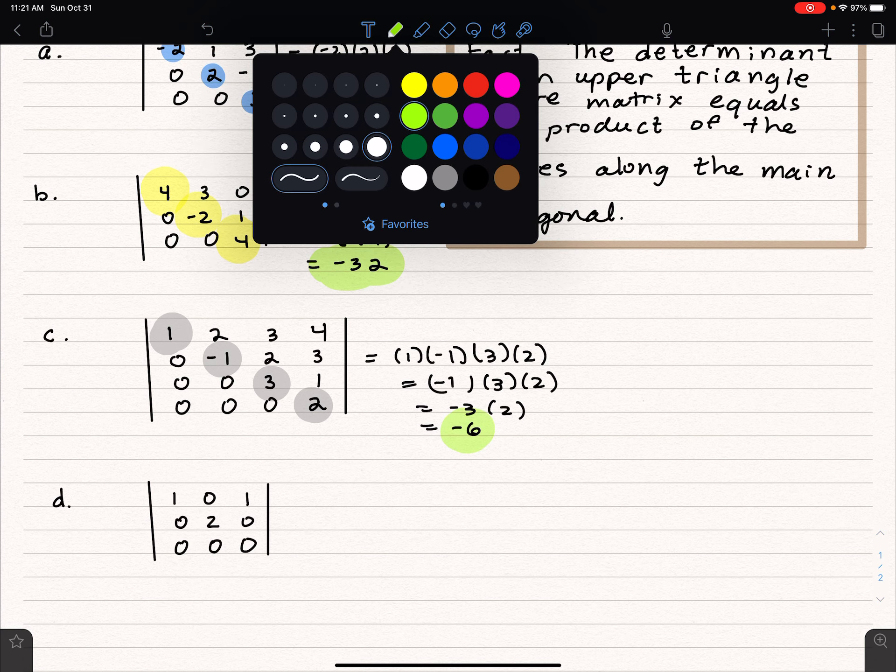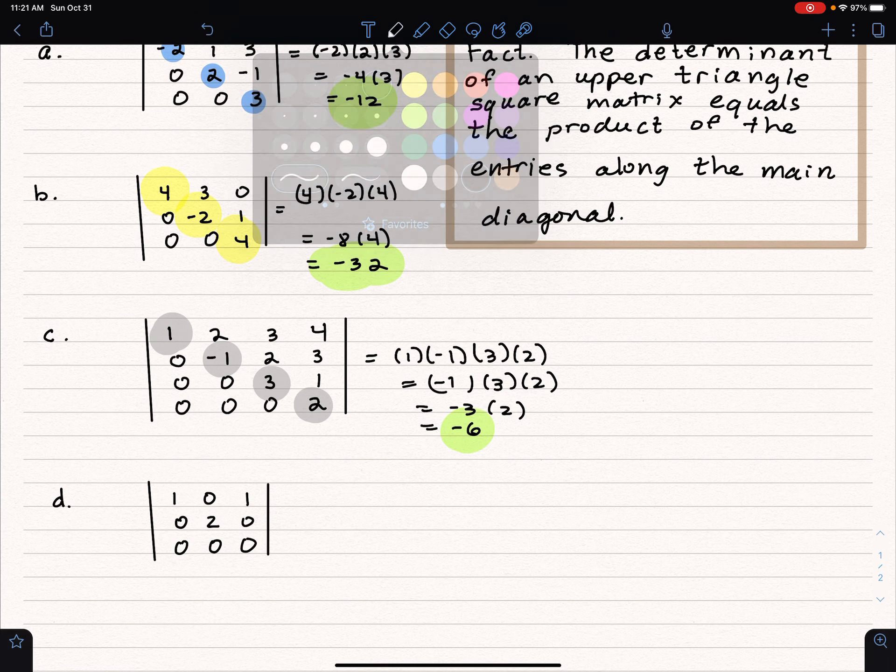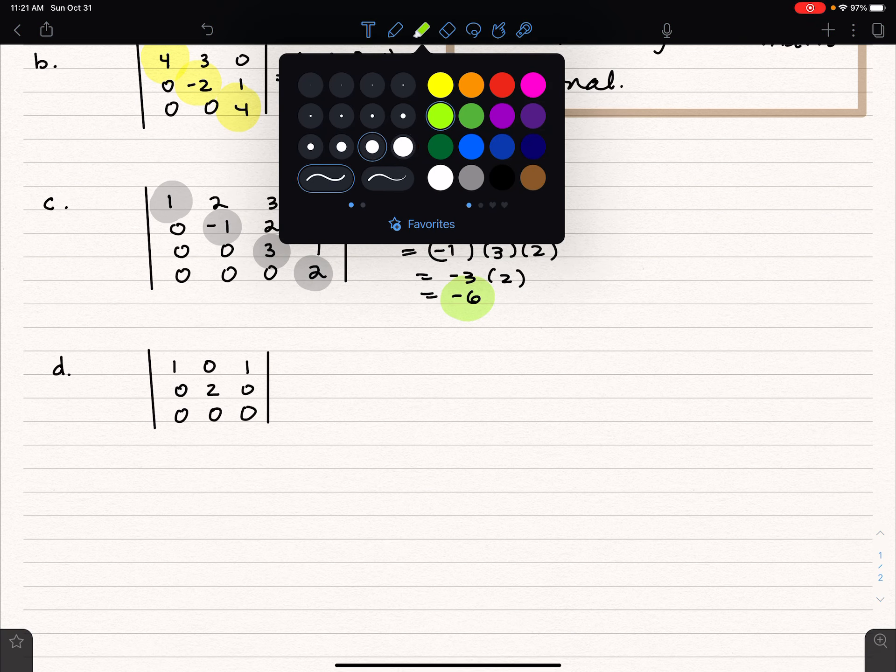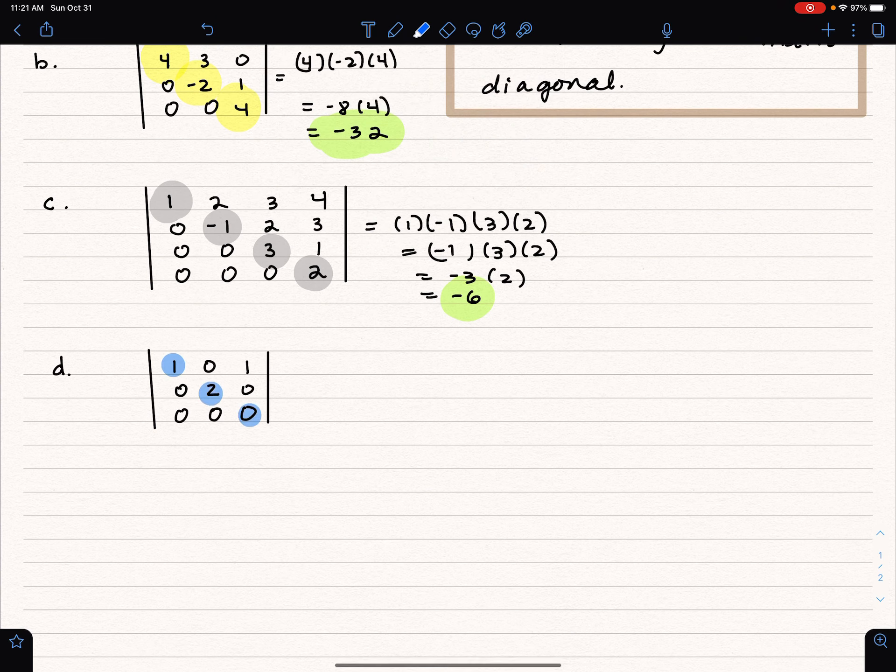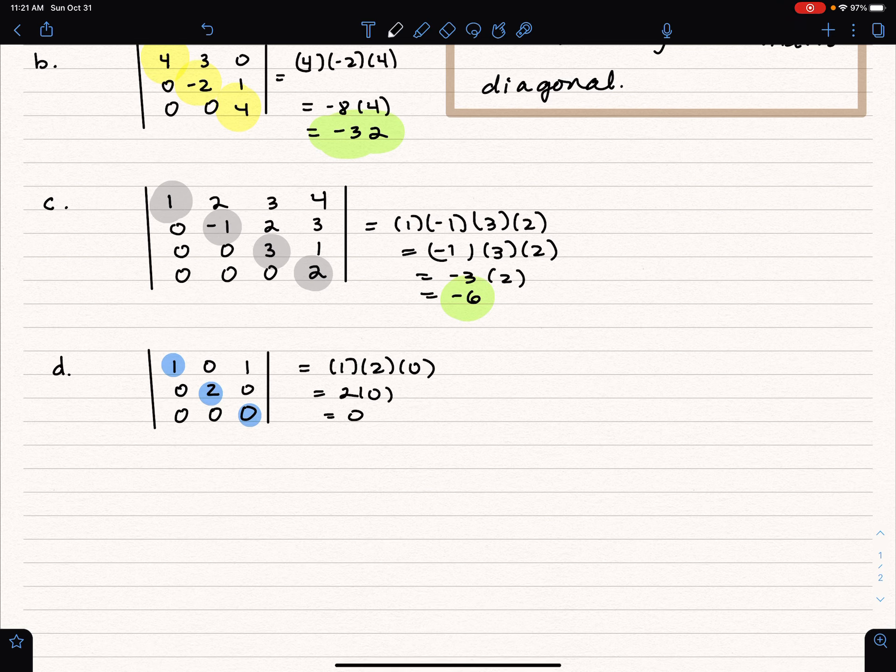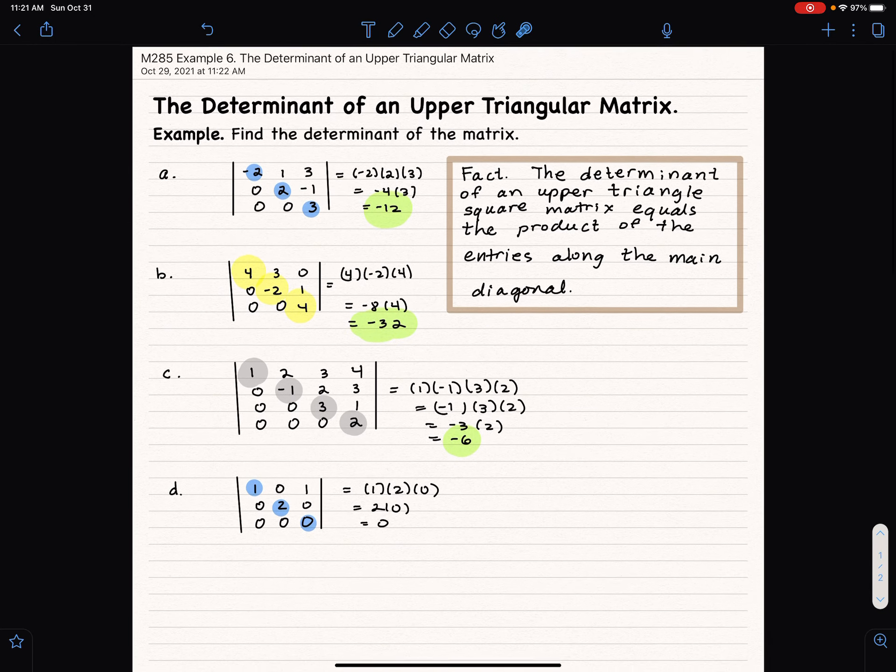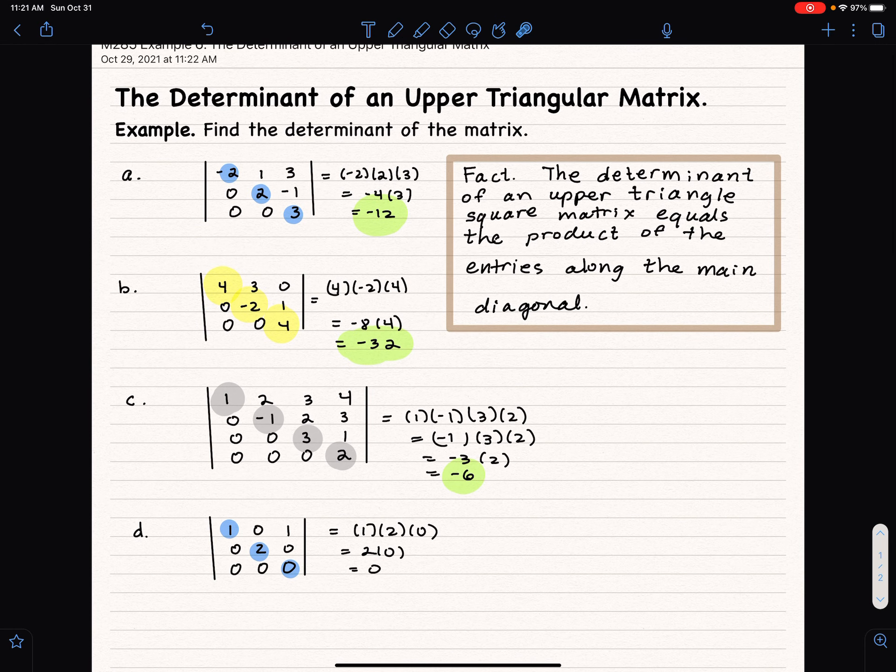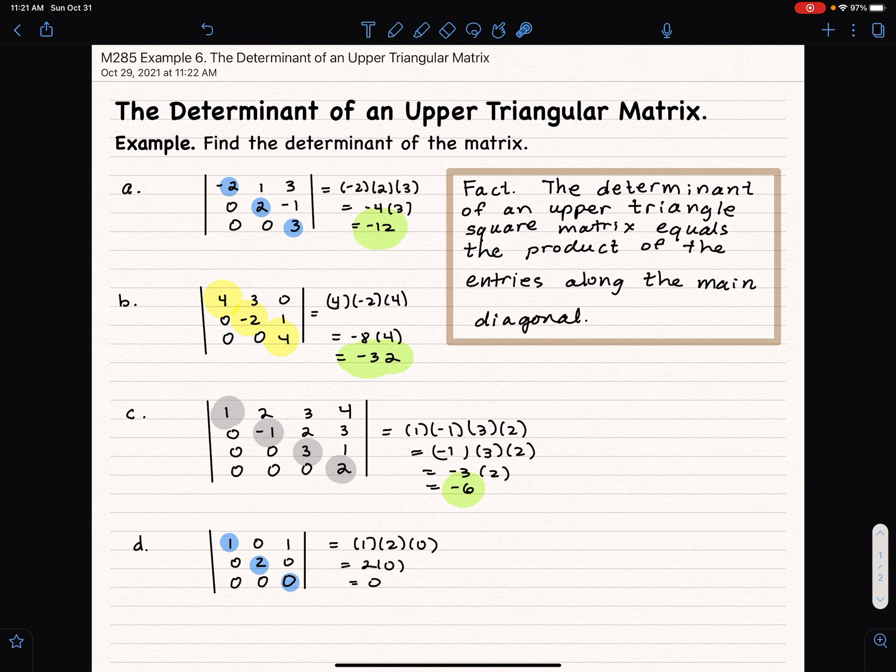Okay, hold on. Upper triangular. Let's go ahead and multiply across the main diagonal. And what do I get? 1 times 2 times 0, which equals 0. Notice, also, that this guy has a row of zeros. That's another video, that if a matrix has all zeros along either a row or column, then the determinant equals 0.